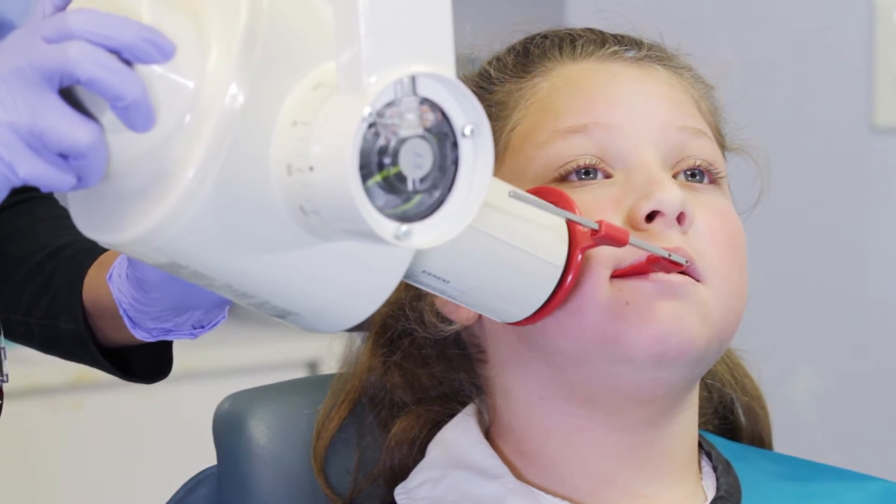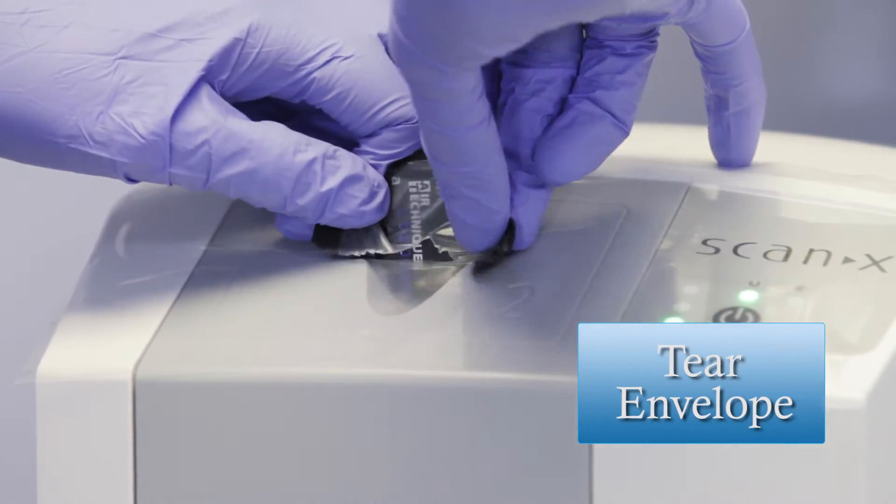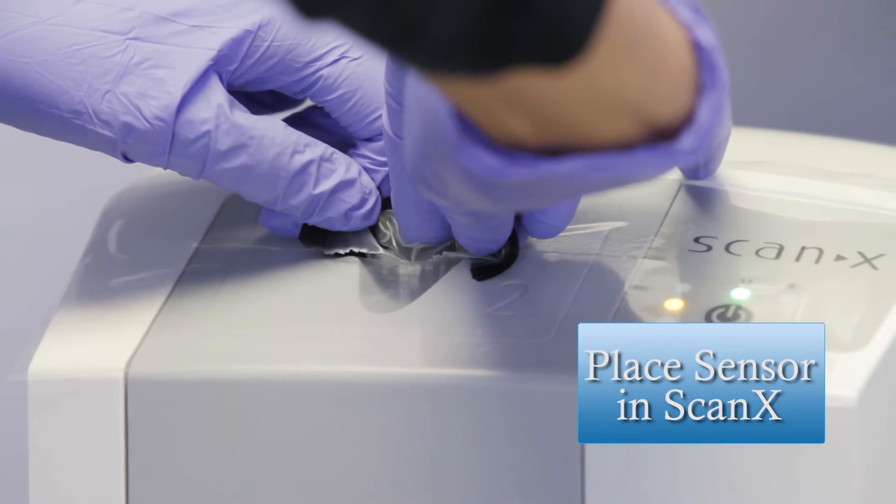Once the x-ray is complete, tear the bottom of the barrier envelope to remove the PSP and place it into the opening.